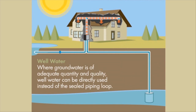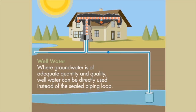If a well is available that produces sufficient volumes of water, an open loop system can be installed. An open loop system takes water from the well, pumps it through the heat pump system, and then returns it to the environment in a responsible, renewable manner.